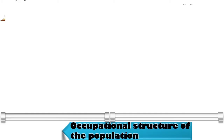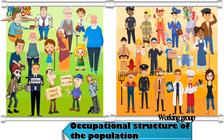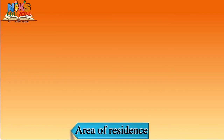The third factor is the occupational structure of the population. The population can be classified into working and non-working groups. People who are not in jobs or professions despite being in the productive age group fall under non-working groups, which are dependent on the working group. If the proportion of working population is higher in a region, the population is termed as industrious, and such a region sees rapid development.